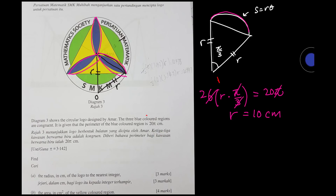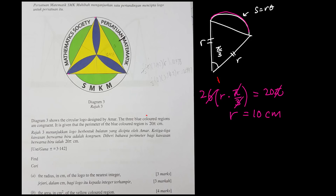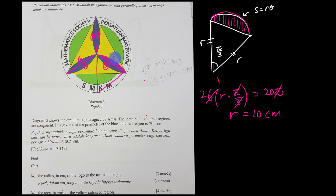The next part asks us to find the area of the yellow color region. To do this, we need to find one segment — cutting a sector in half shows what a segment looks like. We have one, two, three segments; splitting each in half gives six segments total. I'll sum all segments and then subtract appropriately.